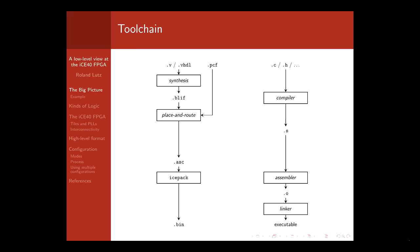On the right-hand side for comparison is how it works with a processor: you start with a source file, for example C, which is preprocessed and compiled into an assembler source file, assembled into the object file, and linked into the executable. The object file is already a machine-readable representation of the program, and object files are linked together into a final image. There is a similar step for FPGAs: you can compose multiple binary bitstreams into a bitstream with multiple configurations from which one can be selected at runtime, but normally this is not done.